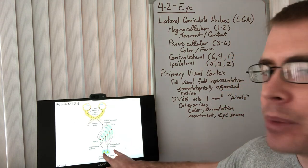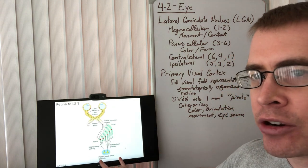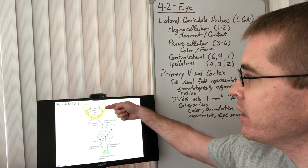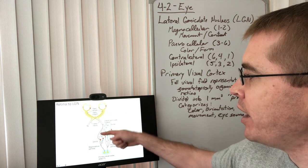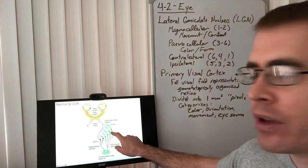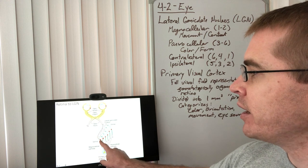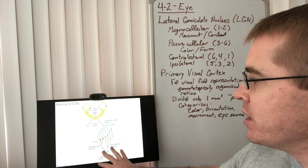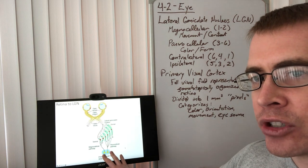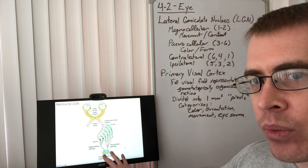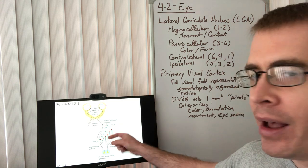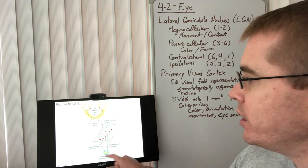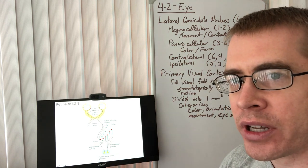Here we have that information added to our diagram about the LGN. We have the different layers of the LGN, and we have how the ipsilateral eye travels to layers 2, 3, and 5. The contralateral eye, shown as the solid line, travels to layers 1, 4, and 6. The magnocellular and parvocellular pathways combine and send that information to the visual cortex, the occipital cortex.